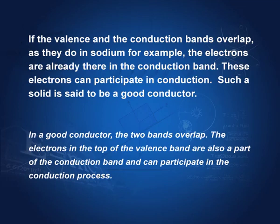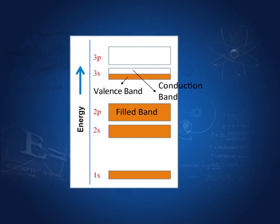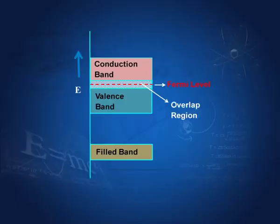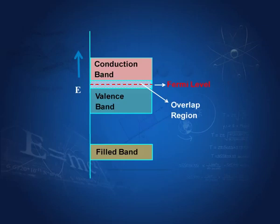If the valence and conduction bands overlap, as they do in sodium — where in the 3s state the conduction band and valence band overlap because electrons can have a continuous range of energies — then in metals the conduction and valence bands overlap. This means the probability is very high that electrons will jump from valence band to conduction band. It is a two-way process. In a metal or good conductor, the conduction band and valence band overlap, and this overlap makes it possible for electrons to go from one to the other. Such a solid is said to be a good conductor.